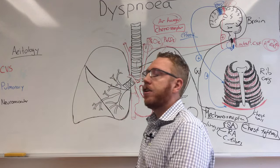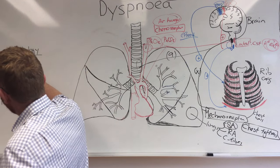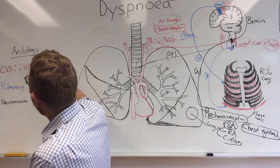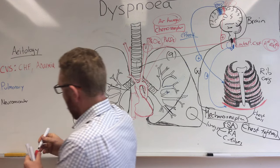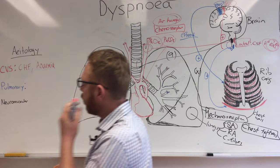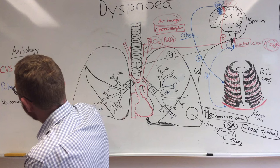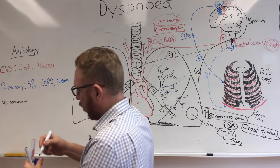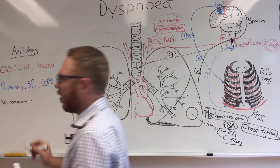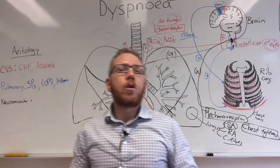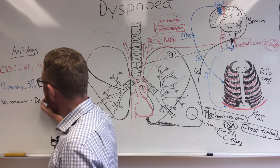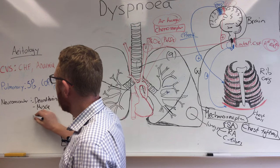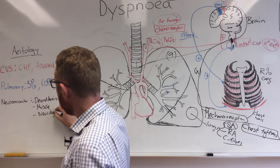Moving across to the etiologies, the common etiologies in the cardiovascular system would be congestive heart failure or anemia. For the pulmonary, the best way to remember them are the five Ps, along with COPD and asthma. And for neuromuscular, this is basically anything that's going to affect the way that the muscles are told to work — so this could be deconditioning, any kind of muscle disturbance or neurological disturbance, even obesity.